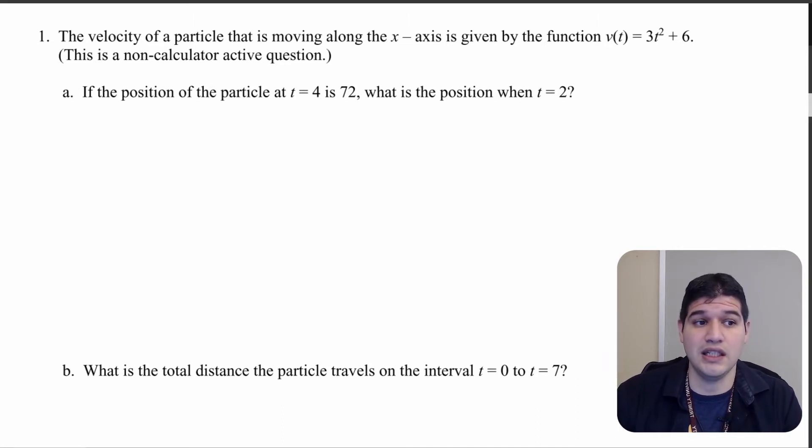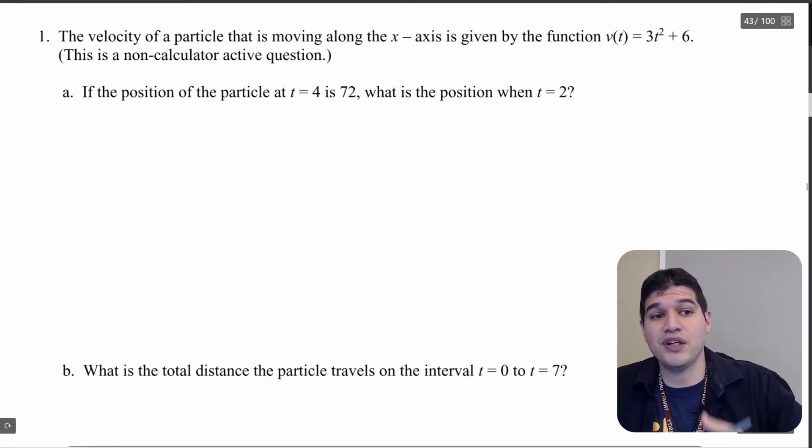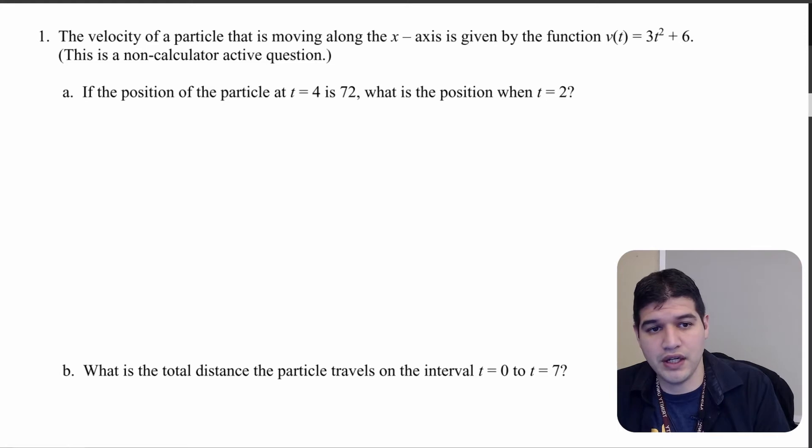So what is the position when t equals 2? Let me write this down with some information that I know. We're given velocity, so if I want to go up to position I'm thinking integral. We're going from 2 to 4 here and I'm going to put down my velocity equation. So that's going to be 3t squared plus 6 dt.